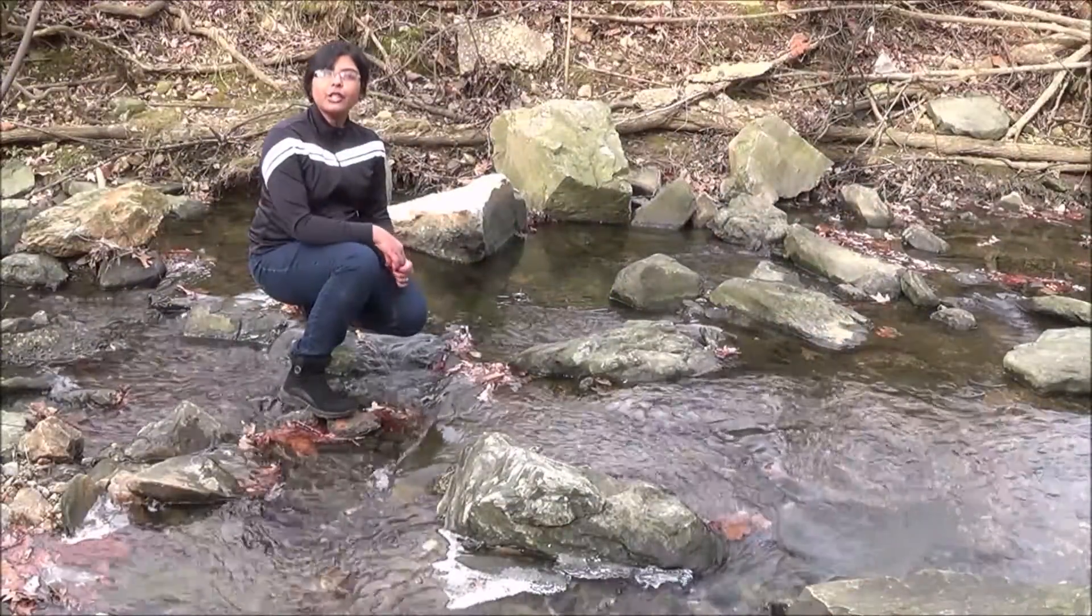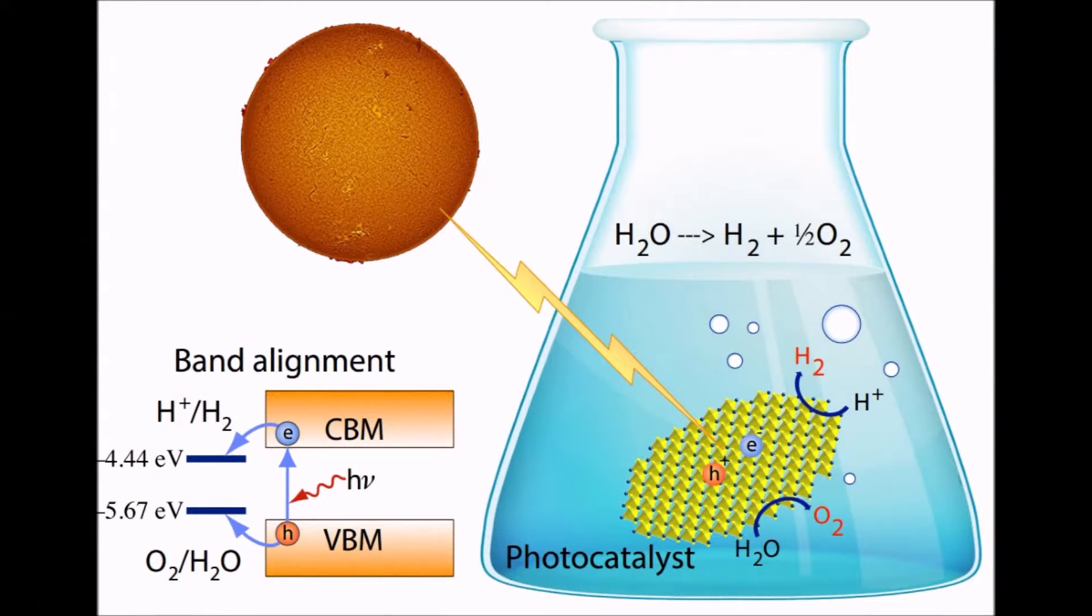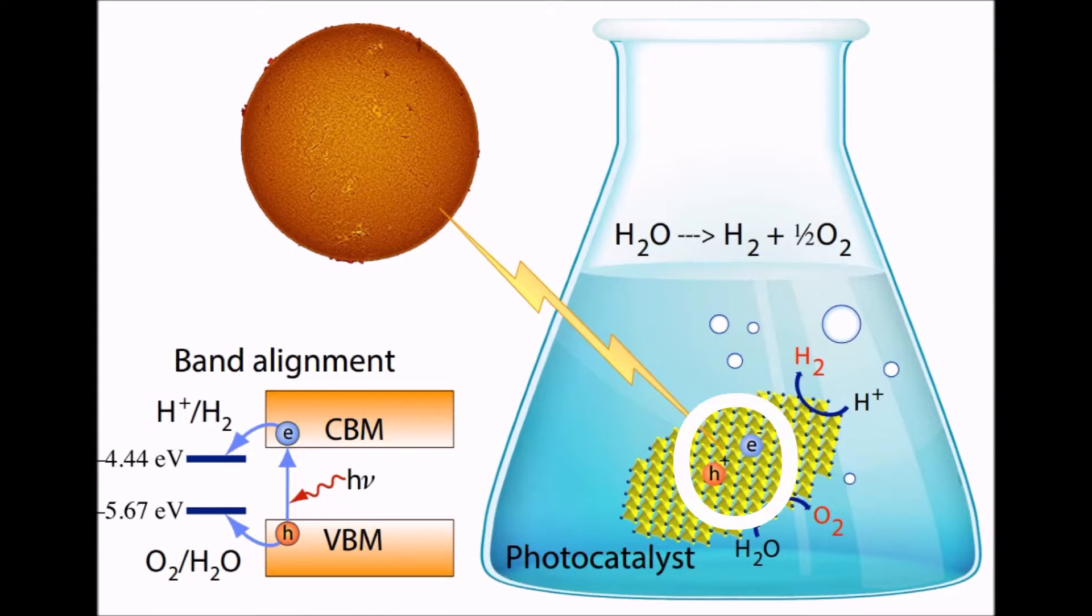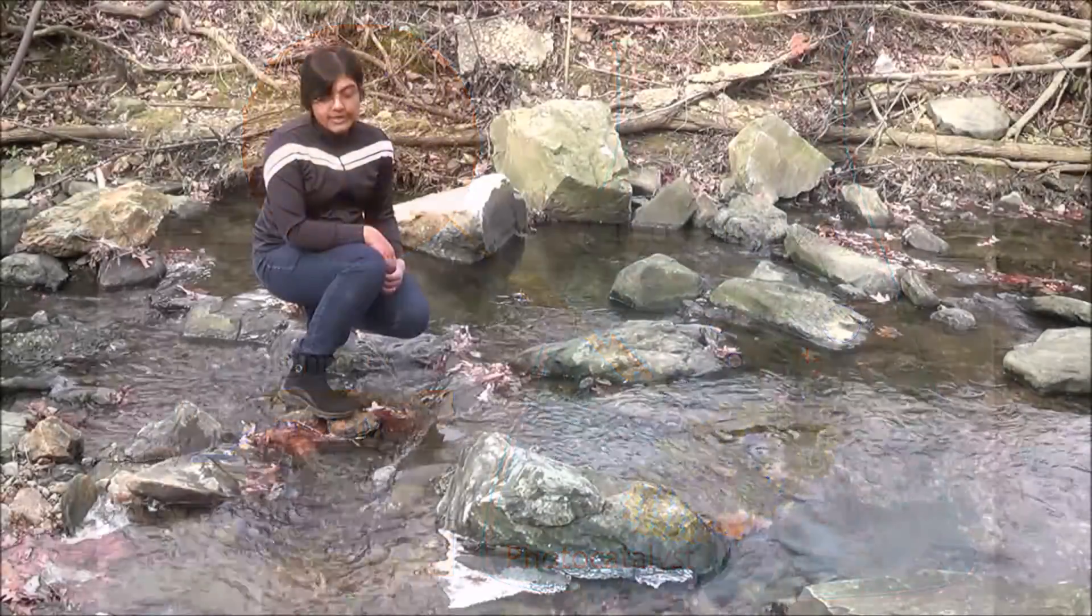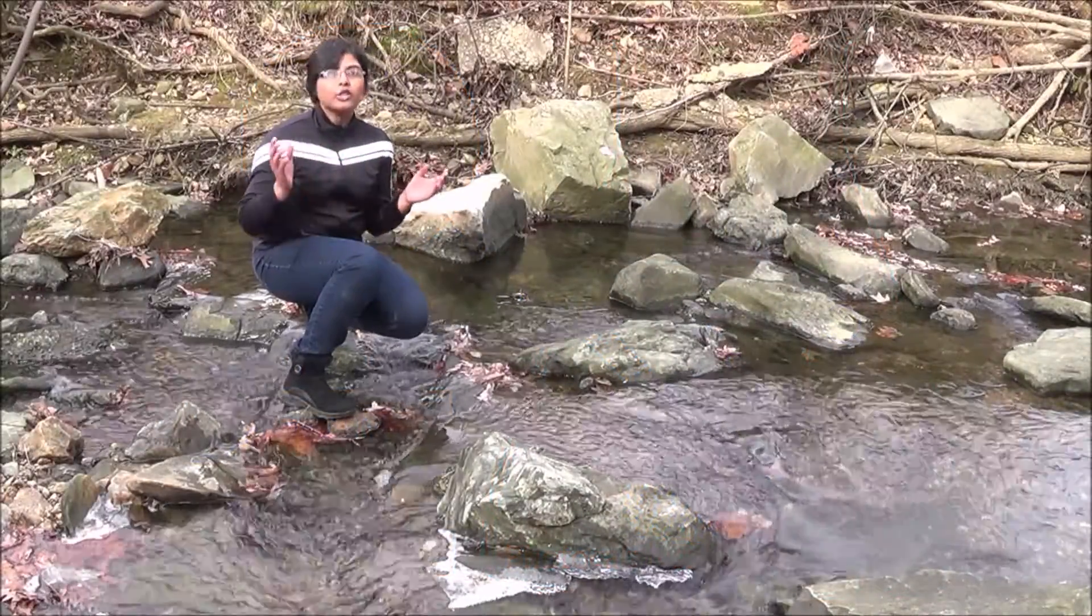When exposed to natural light or artificial light of sufficient energy, a photocatalytic material can generate unbound electron and hole pairs. The electrons can participate in hydrogen reduction reaction and the holes in oxidation reaction. Thus, a water molecule can split into hydrogen and oxygen gas.